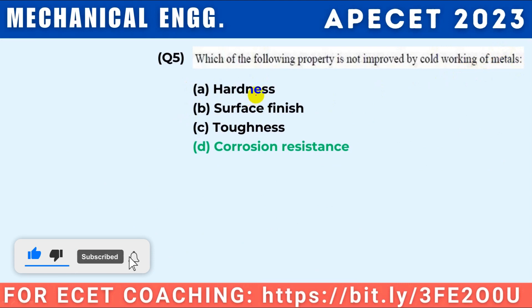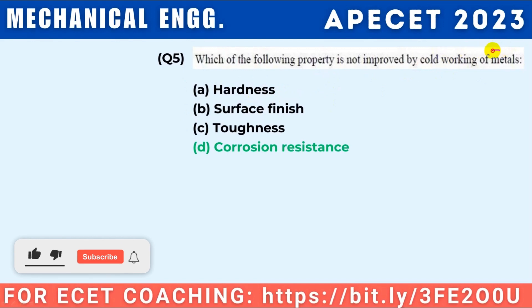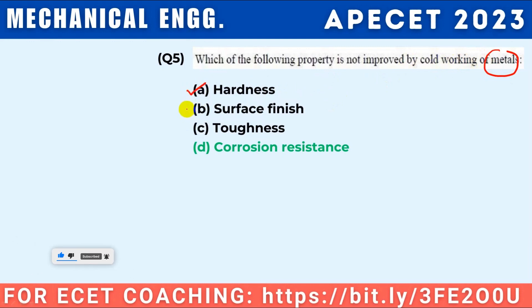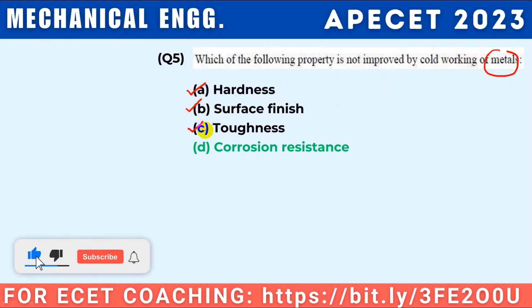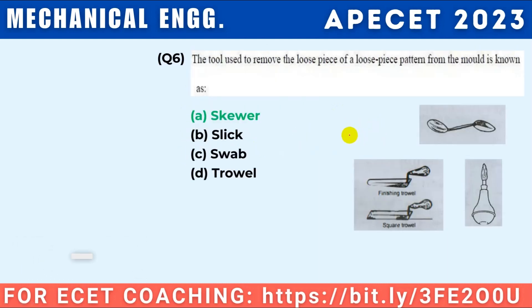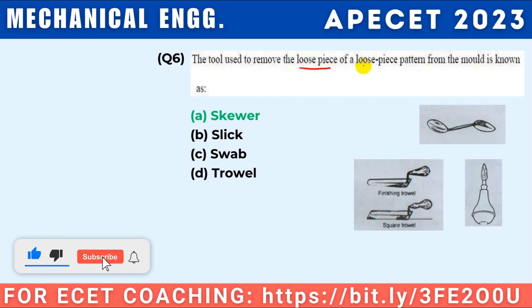Which of the following properties is not improved by cold working of metals? In cold working, hardness is improved, surface finish is improved, toughness is improved, but corrosion resistance is not improved. So your answer is corrosion resistance.